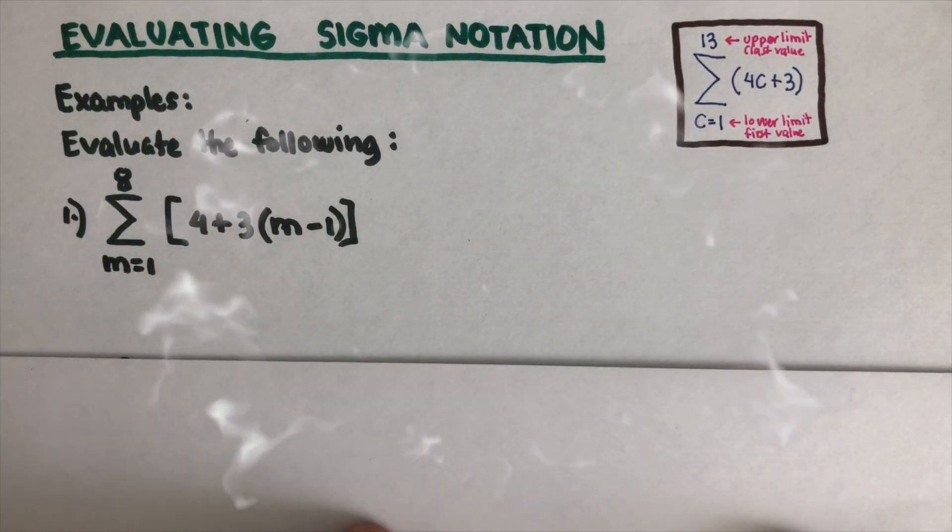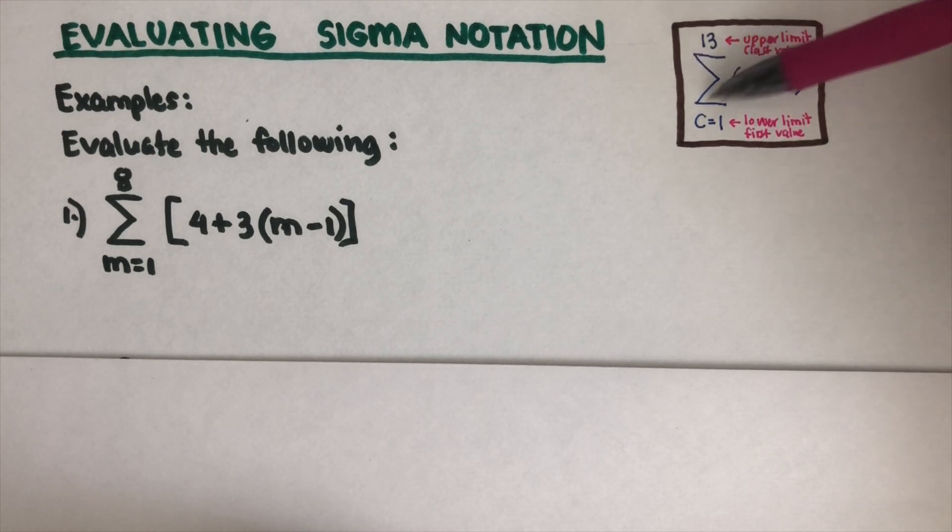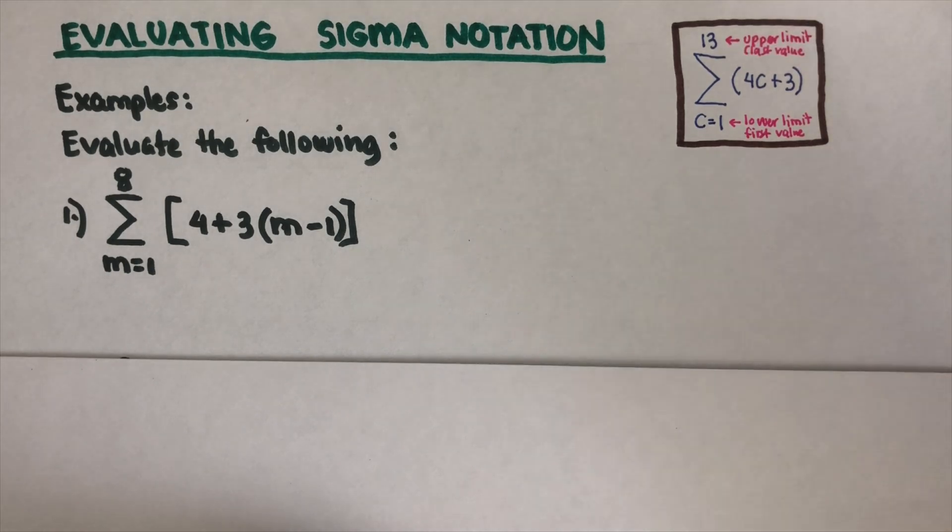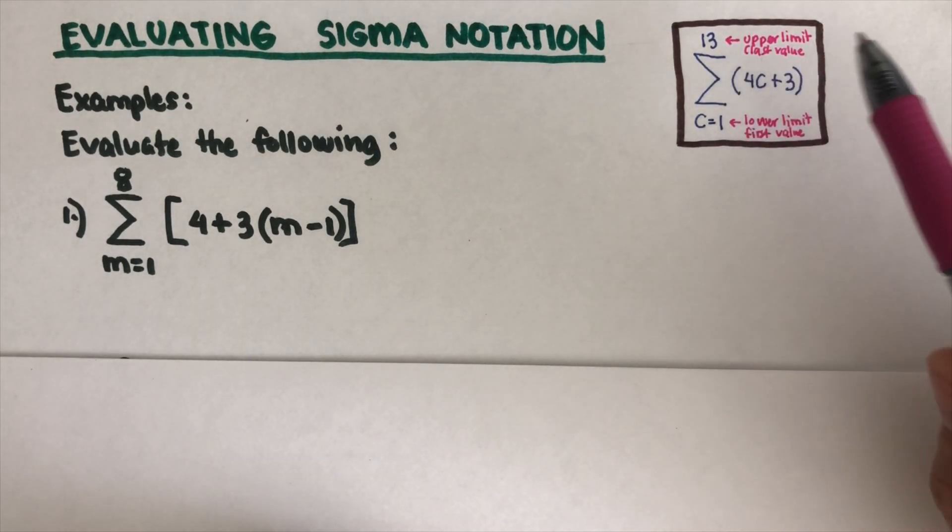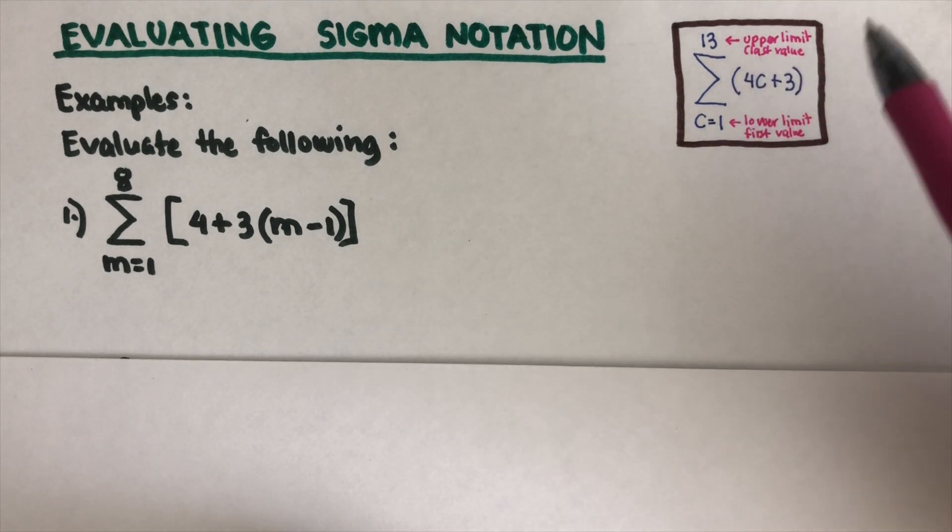Hello everyone, today we will be evaluating Sigma notation. Sigma notation is represented by this Greek letter, which looks like this. The number on top refers to the upper limit, or the last value that we're going to be considering.